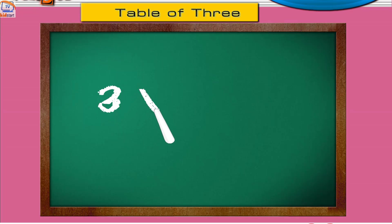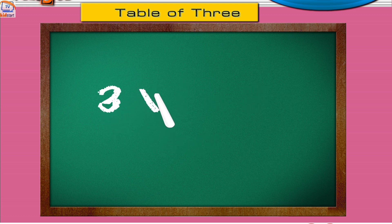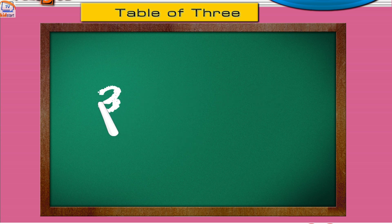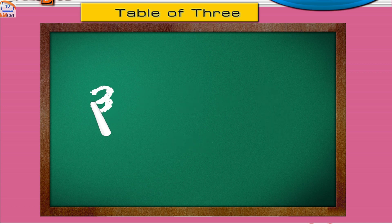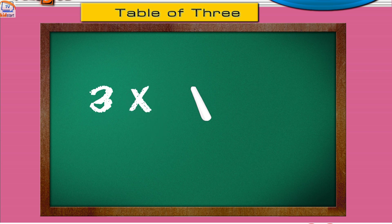Three ones are three. Three twos are six. Three threes are nine. Three fours are twelve. Three fives are fifteen.